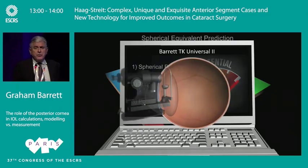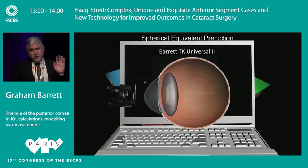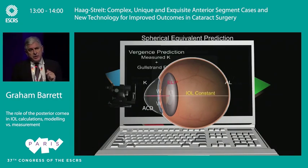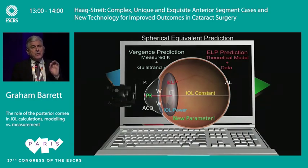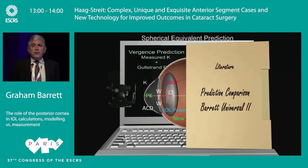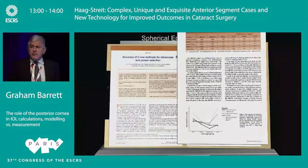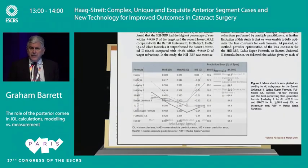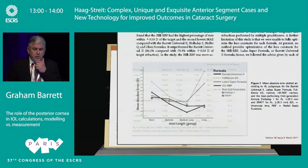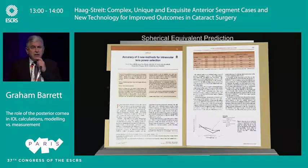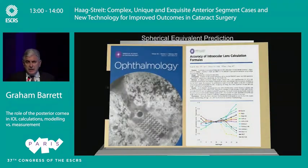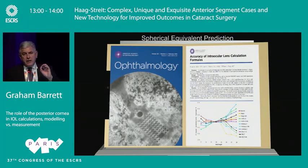For spherical power, there are two elements: divergence calculation for lens power, and ELP prediction. The ELP prediction stays basically the same, but divergence prediction is now potentially based on this new parameter. The Universal formula performs well compared to traditional formulae and even some newer AI-based formulae. The prediction error versus axial length is very flat, which is why you don't need special formulae for short, medium, and long eyes — modern formulae are pretty flat across the axial range.